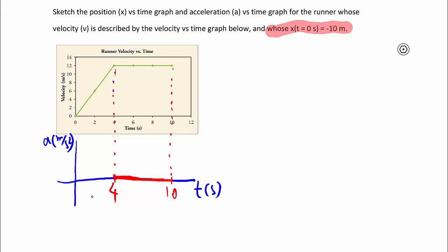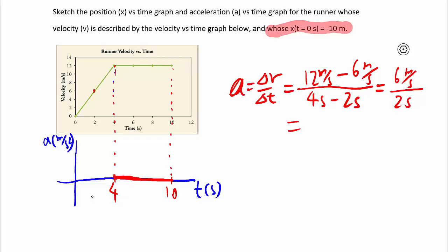For the first four seconds, we have to do a is equal to delta v over delta t, picking two points on the line to get the slope. I'm going to pick this and this point. We have 12 meters per second minus what looks like 6 meters per second at 4 seconds and 2 seconds, respectively. So we have 6 meters per second over 2 seconds, giving us 3 meters per second squared. So there's my 3, and for the first 4 seconds, it's all that. Pretty easy, I hope.